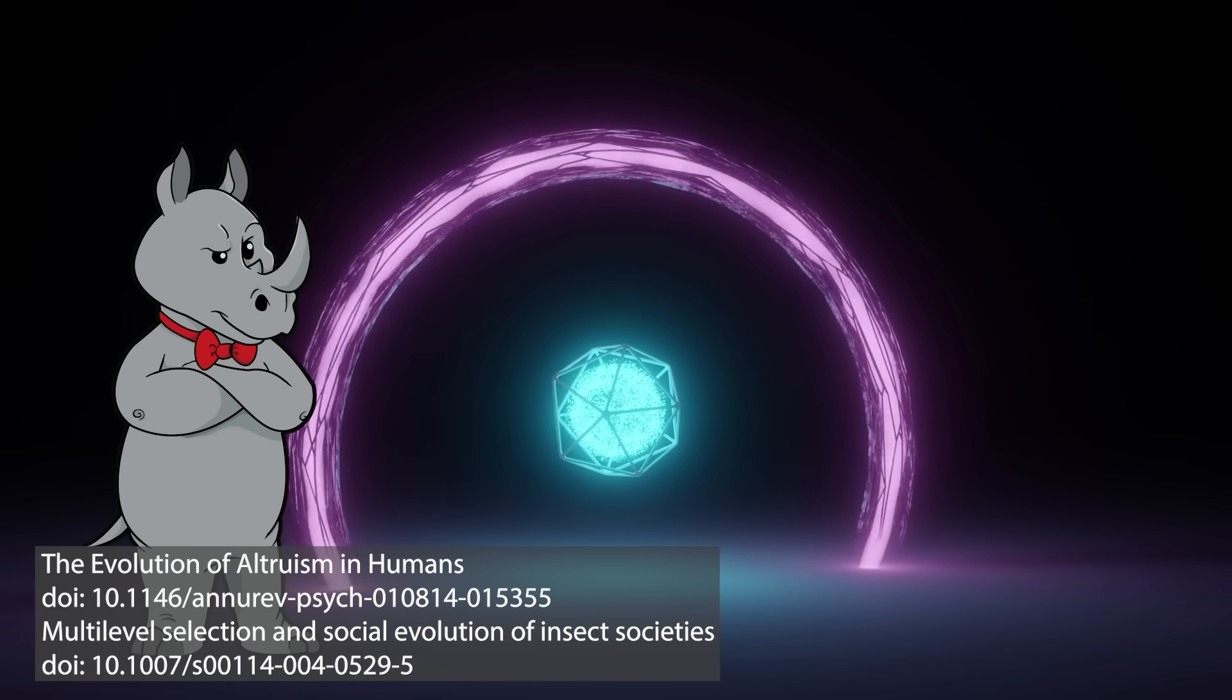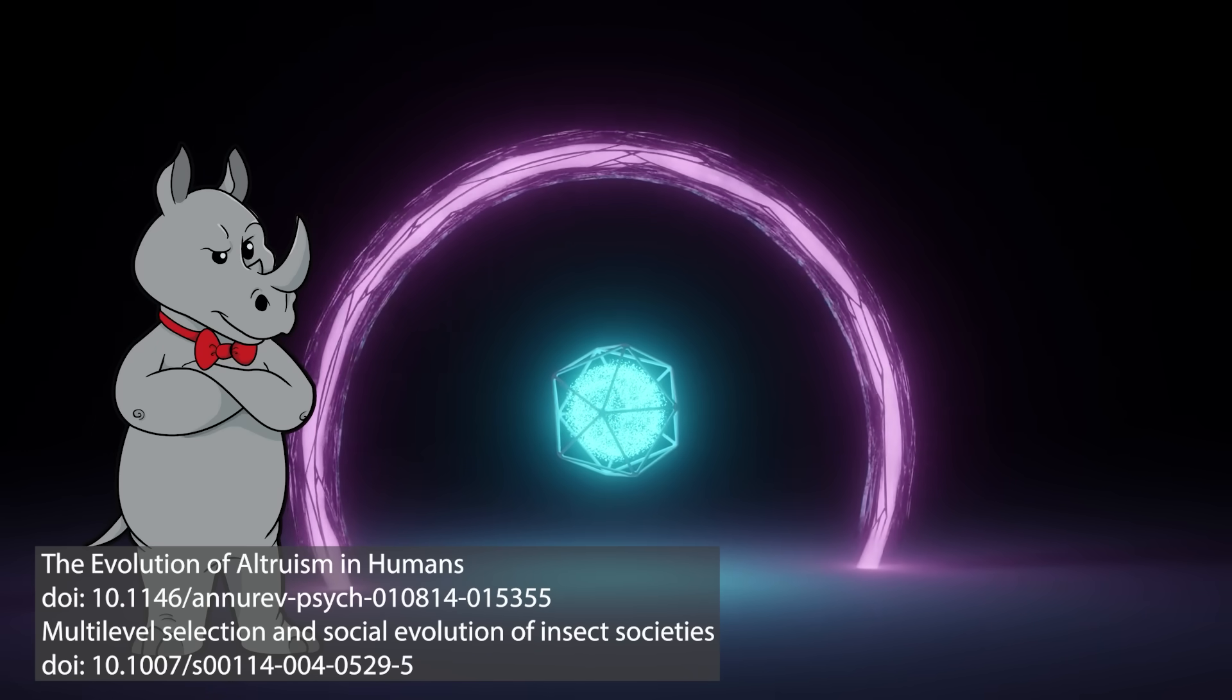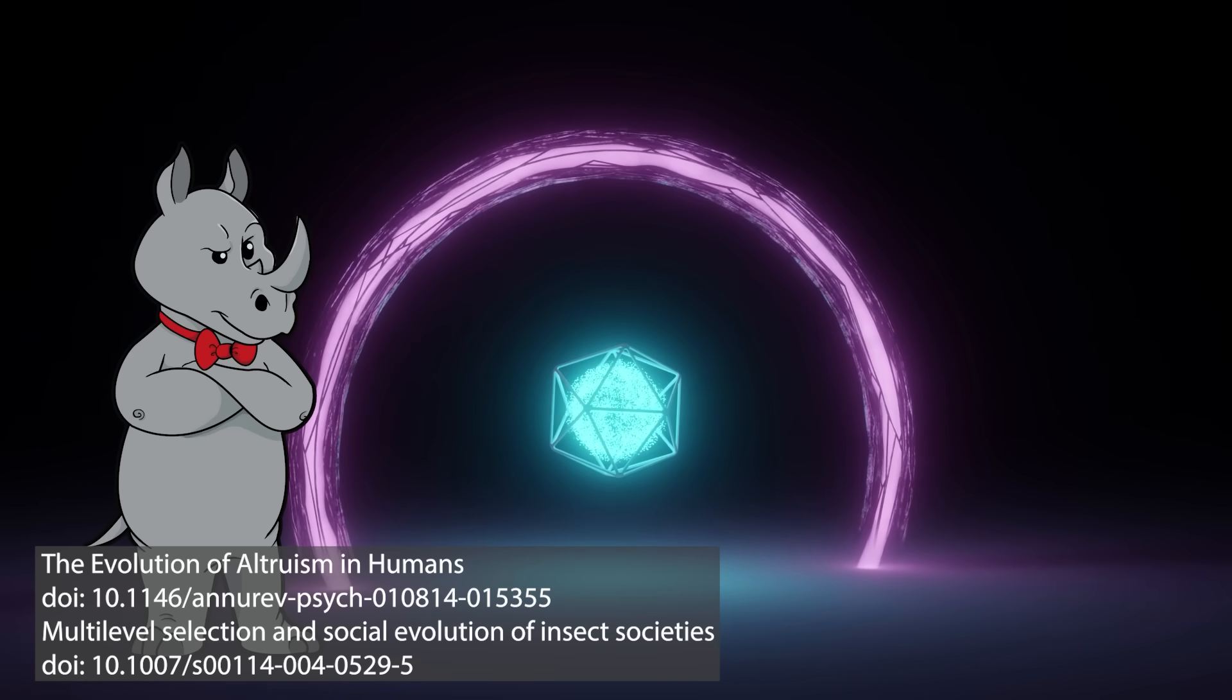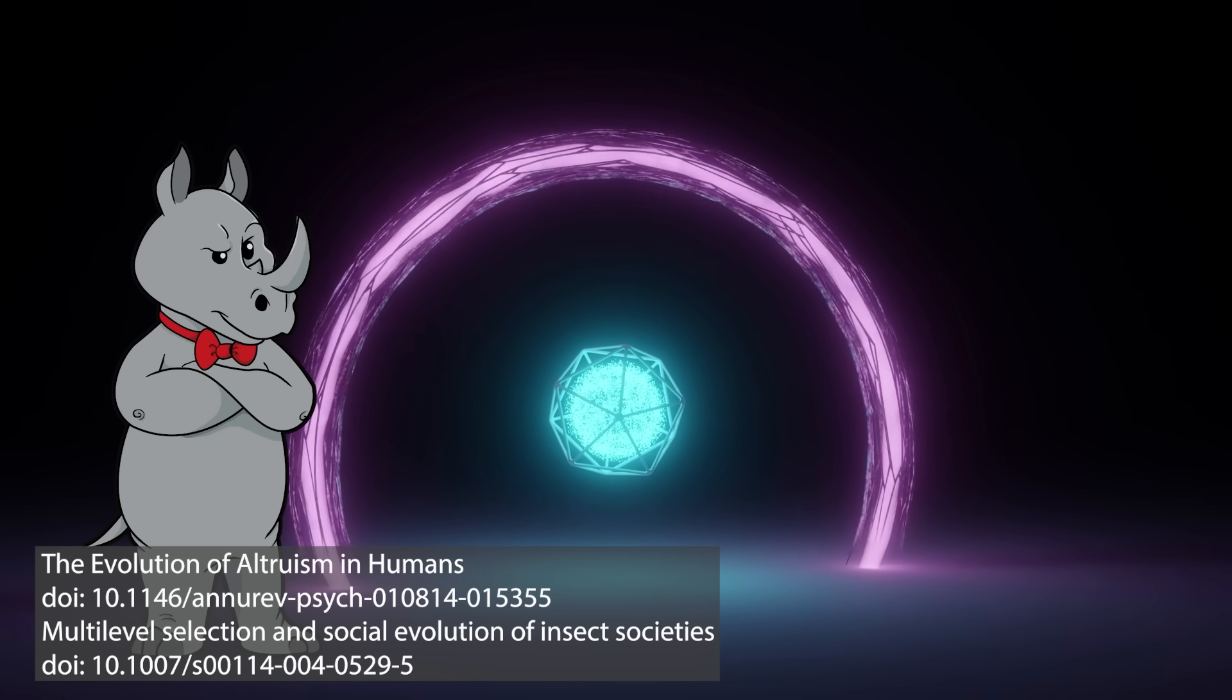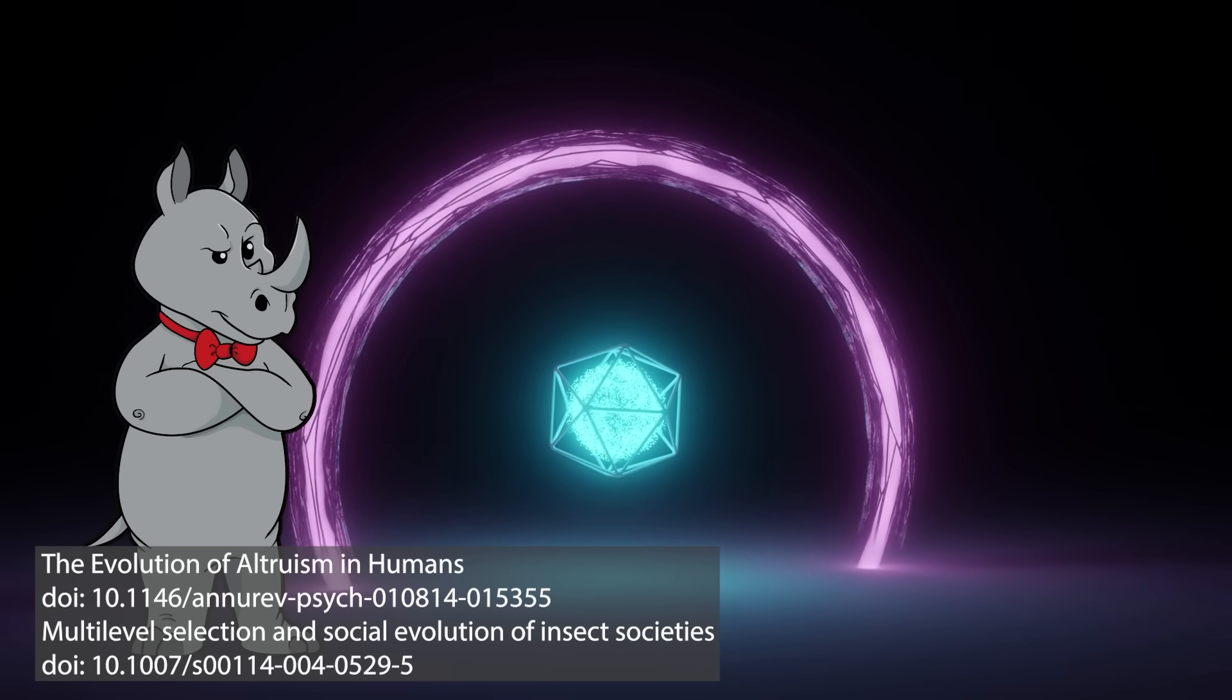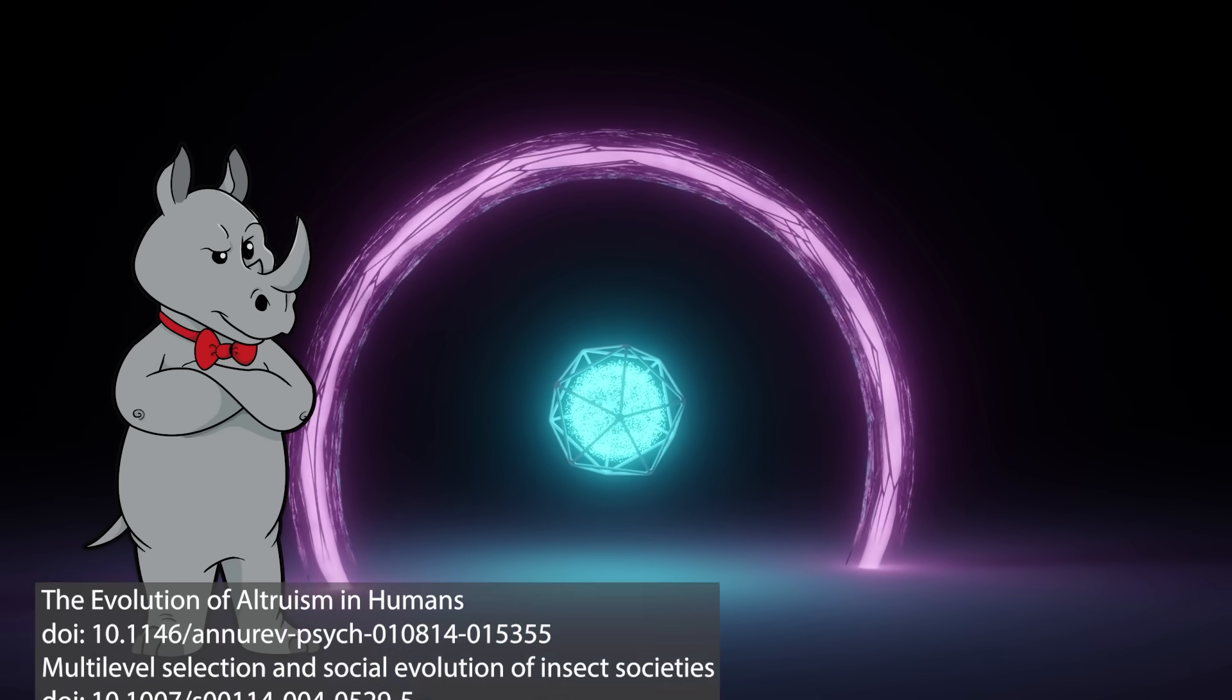Anyway, the explanation for altruism, whether that be referring to human actions or beehives, is essentially the same: group selection. Natural selection does not solely operate on the individual level. It operates on the group level as well. So while selection pressures might favor individuals who behave selfishly, hoarding resources and refusing to cooperate with others, a group comprised of such individuals will often be selected against if there is a competing group with individuals more inclined to cooperate.